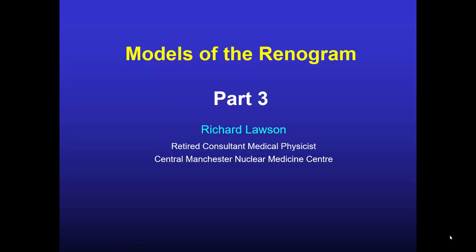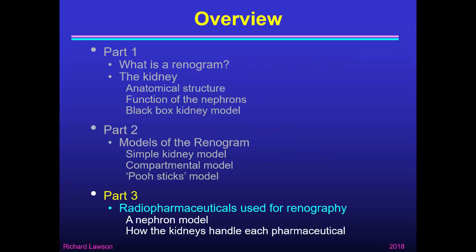This is the third part of my talk about models of the renogram. In the first part I explained what a renogram is and talked about the kidney, and in part two I showed some models of the renogram. In part three I'm going to talk about the radiopharmaceuticals that can be used for renography and show how the nephron model allows us to explain how the kidneys handle each radiopharmaceutical.